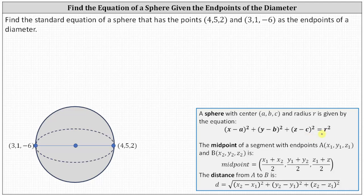To determine the equation, we need to determine the center and then the length of the radius. The center is going to be the midpoint of the diameter, which we can determine using the midpoint formula shown here.